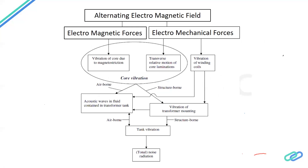The sources in a transformer are: the alternating electromagnetic field, electromagnetic forces (causing magnetostriction-driven vibration), and electromechanical forces (from the transverse motion of core laminations and vibration of the winding coils). The resulting noise and vibration can be structure-borne — felt when near the transformer — or airborne — the noise you hear propagating through the air.